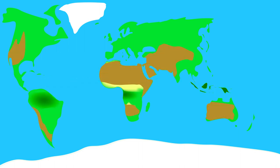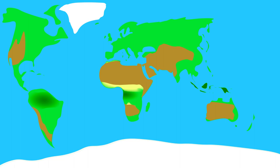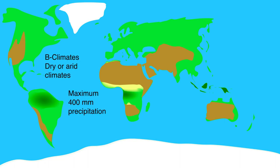Further away from the equator we encounter deserts. Here it is still warm but, unlike the climates around the equator, very dry. This has to do with the high pressure area around these places. Köppen gave these climates the letter B. These are areas with a maximum precipitation of 400 millimetres per year, and are often called dry or arid climates.